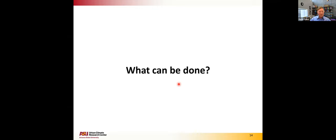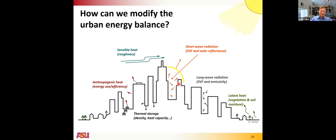When thinking about convincing governments to act and spend taxpayer money, being able to speak about the value in terms of avoided air conditioning costs actually resonates with them as they try to make decisions. Returning to the energy balance figure: the strategies we're going to focus on deal with shortwave and longwave radiation. Ohio State has some tree-planting initiatives, and there's work on urban forestry in Phoenix too, but the technologies I'll focus on today are more centered on radiation balance.